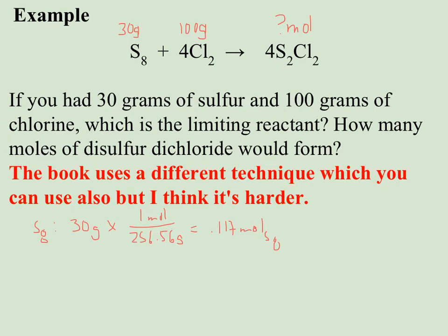That still doesn't tell me how much S2Cl2 it makes, but I can easily now use my equation and see that I get four moles of S2Cl2 from one mole of S8. So I can go ahead and multiply that 0.117 times four and I can expect to make 0.468 moles of S2Cl2 from the sulfur.